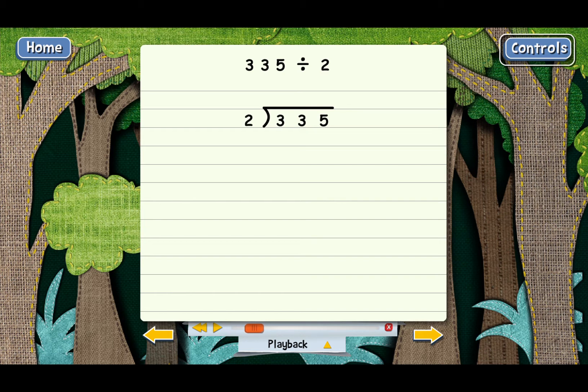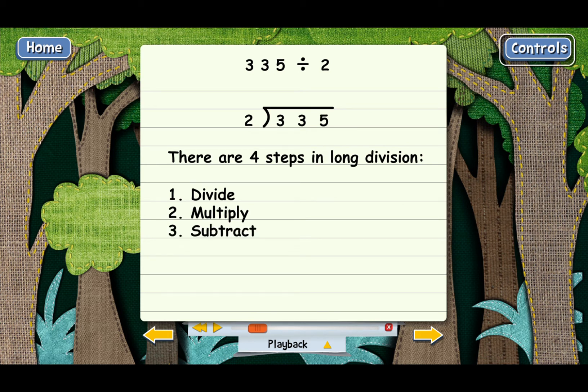Now we're going to go through the steps. Remember, there are four steps in long division: divide, multiply, subtract, then bring down the next digit. And then you start all over again.